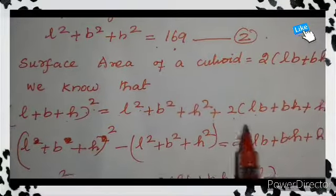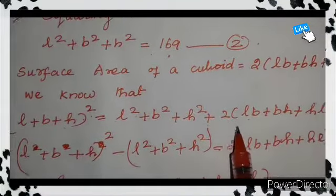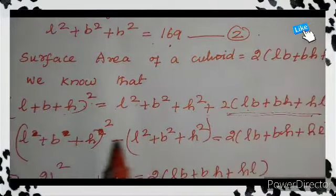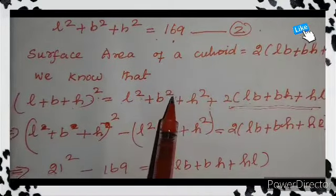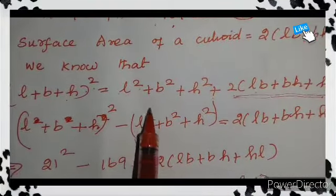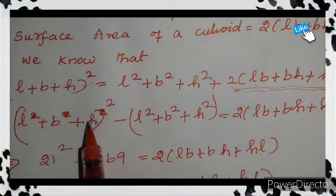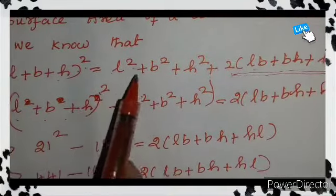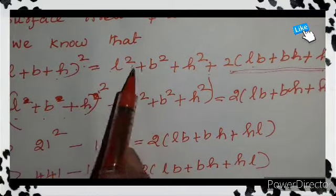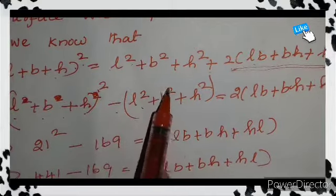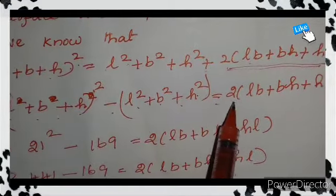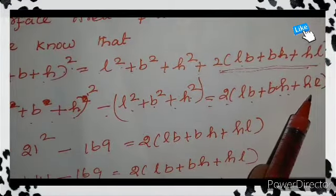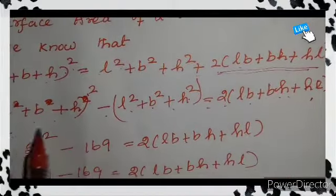Now I am going to use the formula: L plus B plus H, the whole squared, is equal to L squared plus B squared plus H squared plus 2 into LB plus BH plus HL. We need to find the factor 2(LB plus BH plus HL) alone, so bring the remaining term to the other side: L plus B plus H whole squared minus L squared plus B squared plus H squared equals 2 into LB plus BH plus HL.